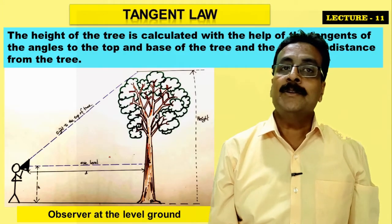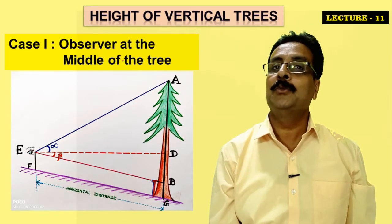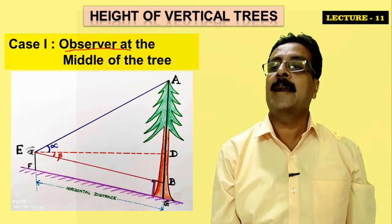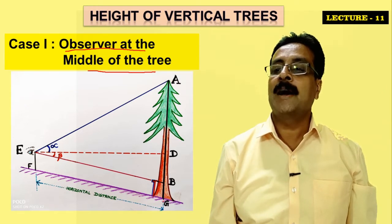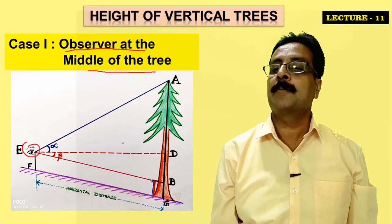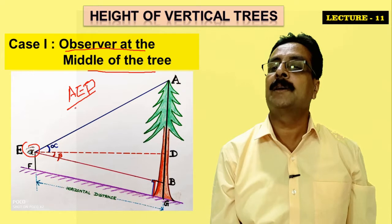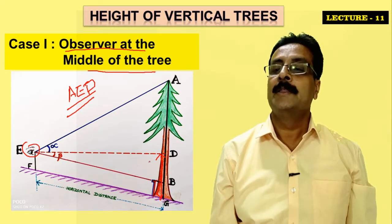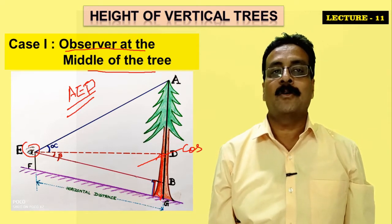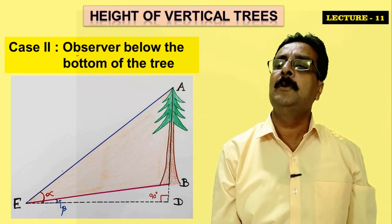For the tangent method with vertical trees, Case 1 is where the observer is at the middle height of the tree on a slope. The observer measures angle up to point D using the tangent method. For segment E-D, the tangent method is also applied. However, if D to G (the upper portion) cannot be measured as a horizontal distance because it is too high, we apply cosine instead. The instrument height (i-height) is added afterward.